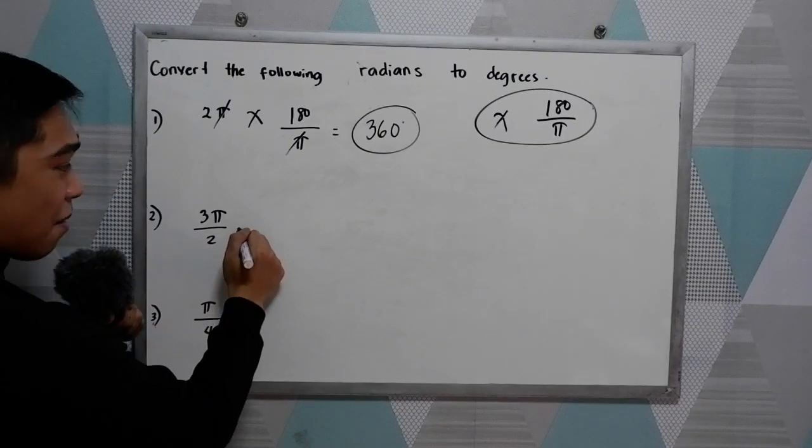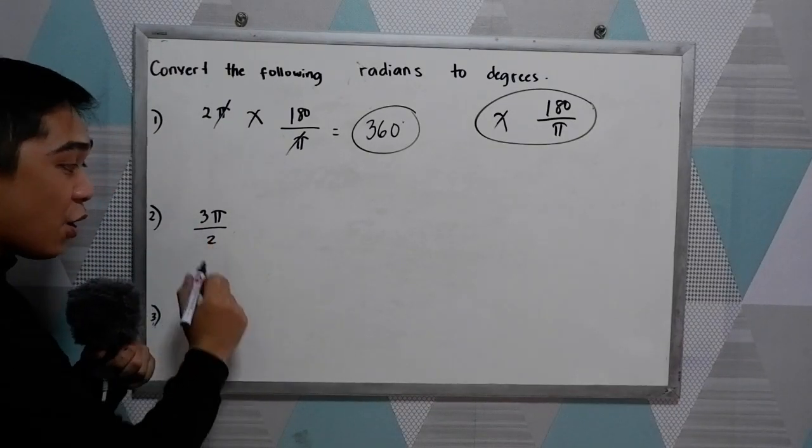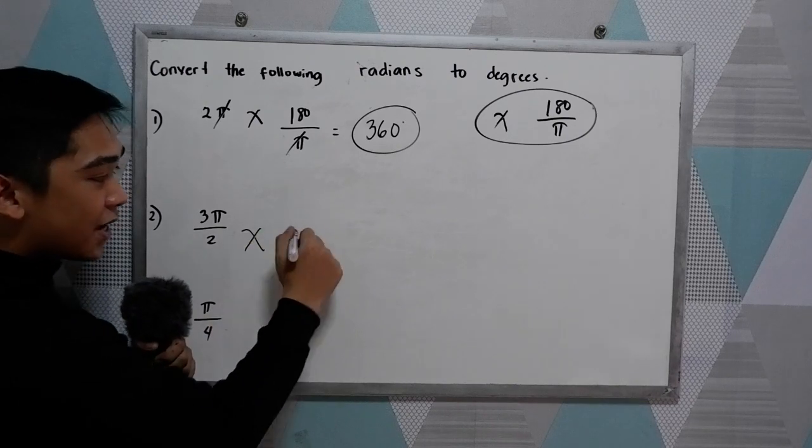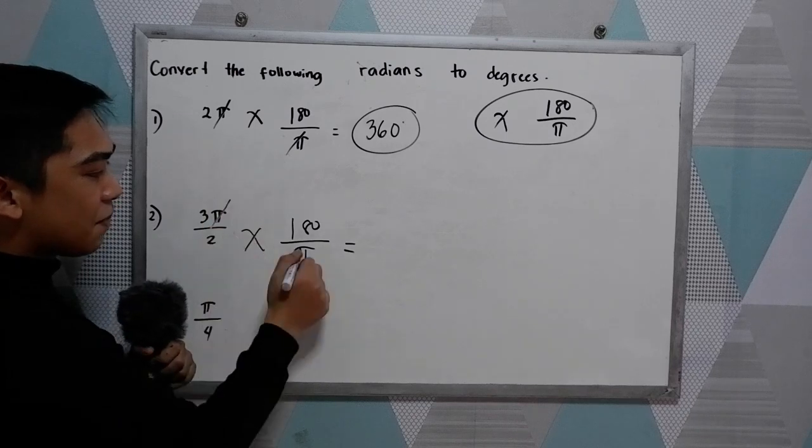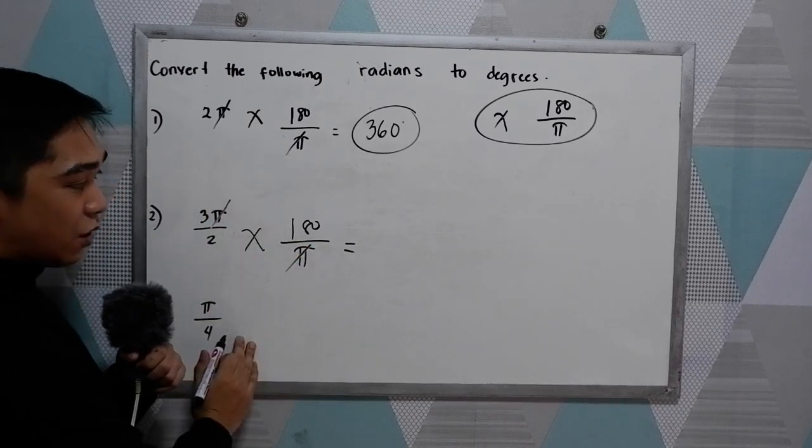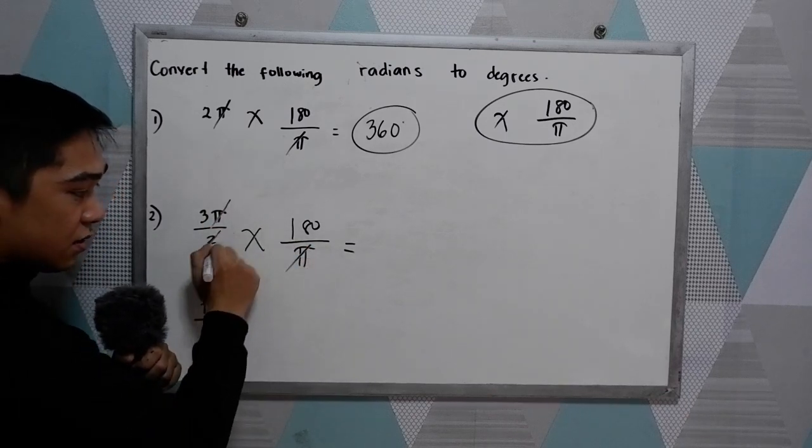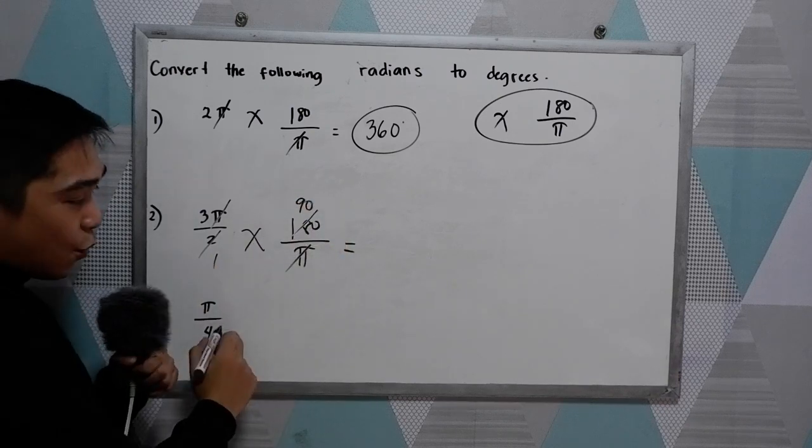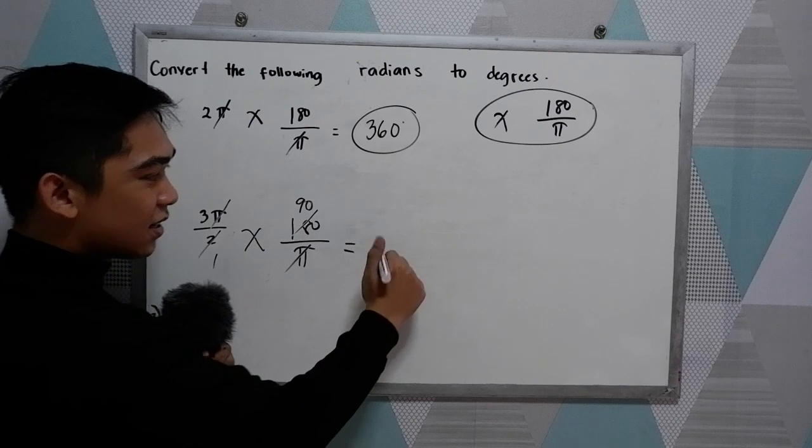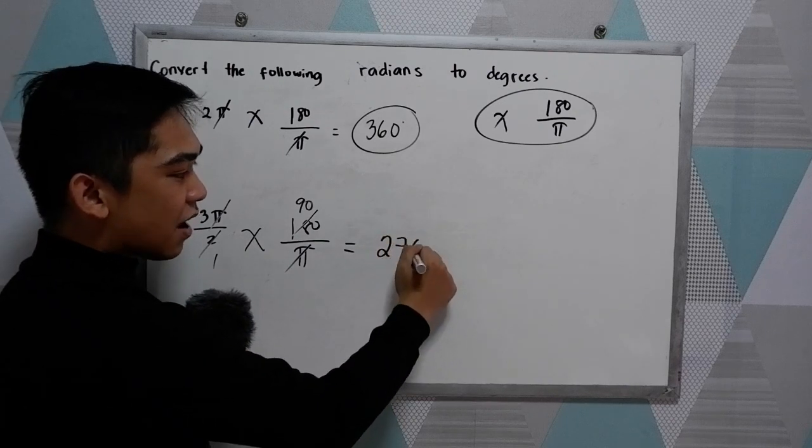Next, number 2, 3 pi over 2. So same step, multiply it by 180 over pi. So cancel pi. We can also cancel 2 and 180. So we have 1, then 90. Now we have 3 times 90, that is 270 degrees.